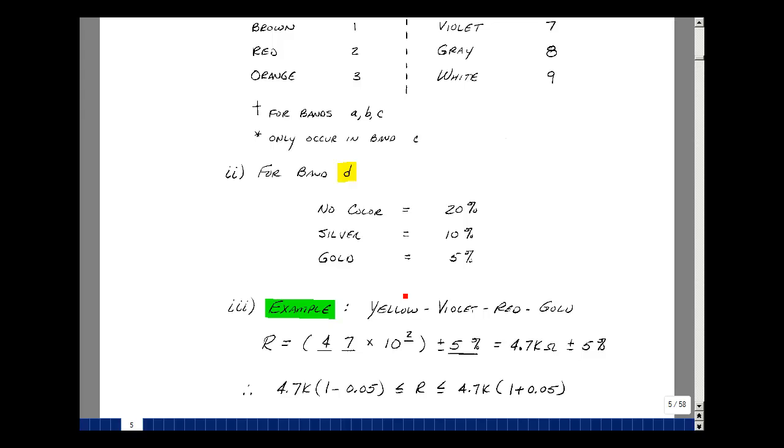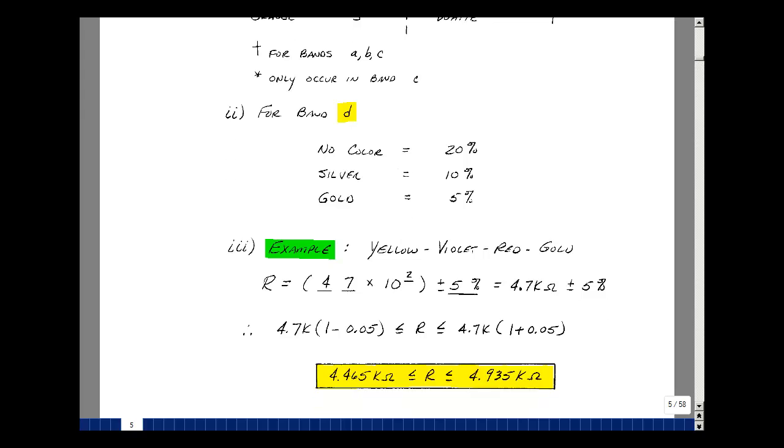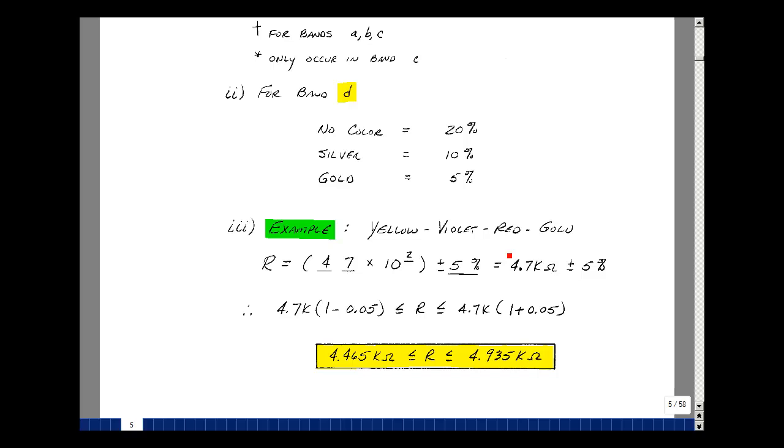Let me do an example to show you how this works. Suppose that I have a resistor that has a yellow, violet, red, and gold color code. So yellow, if you look on the table above is 4, violet is 7, and red is 2.